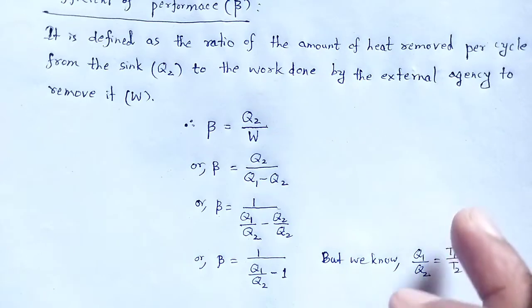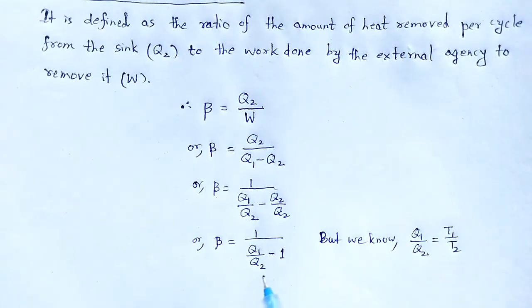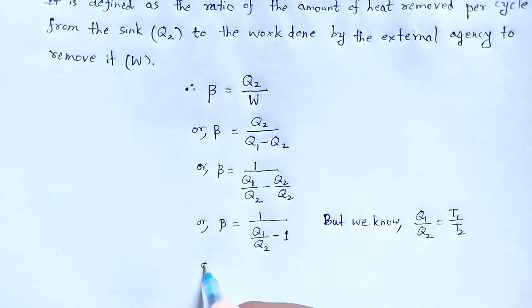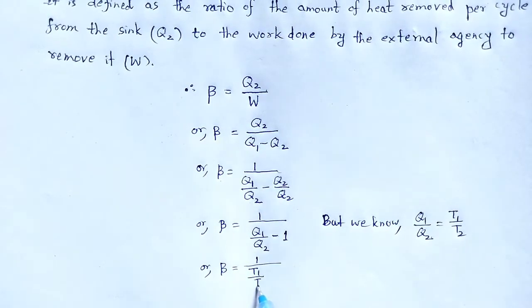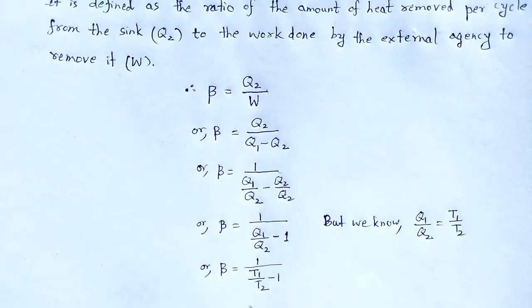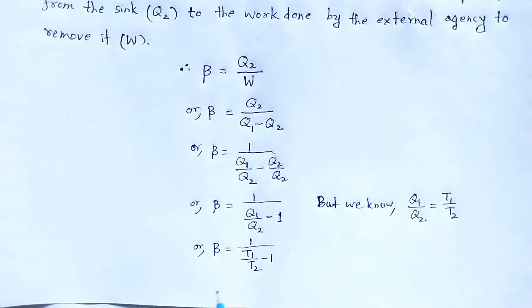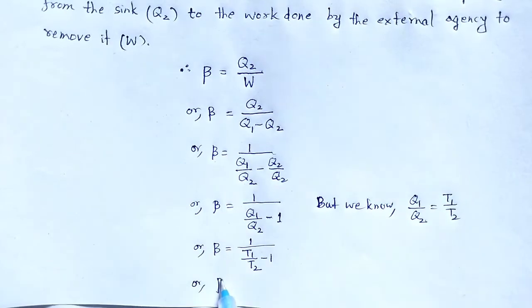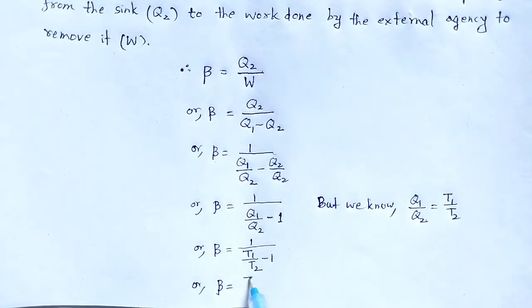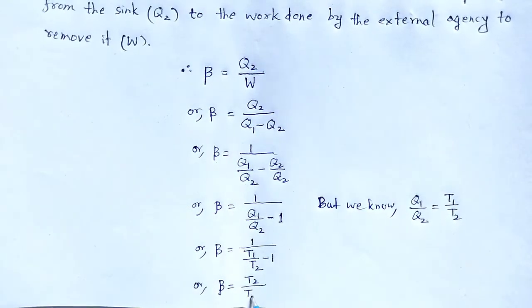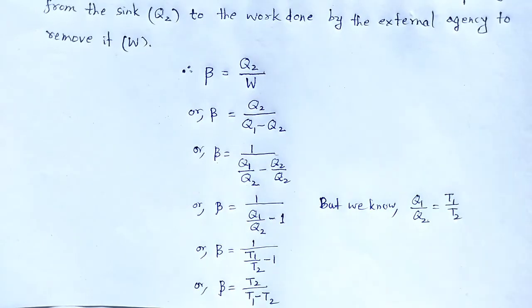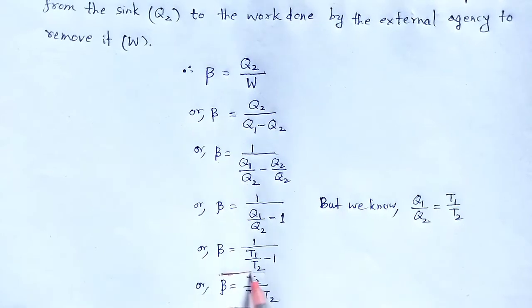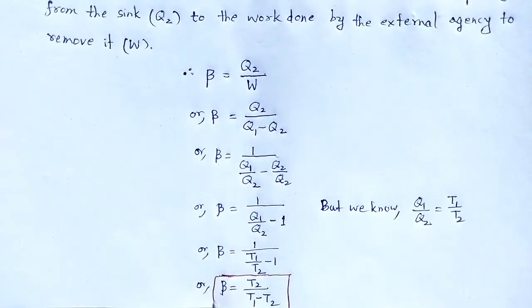Therefore, putting these values, beta is equal to 1 divided by (T1/T2 minus 1), which gives us beta equal to T2 divided by T1 minus T2. This is the expression for the coefficient of performance.